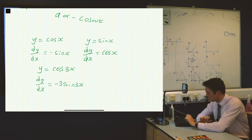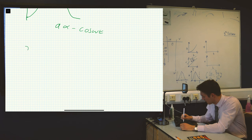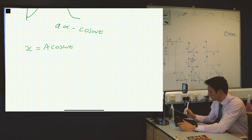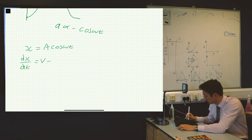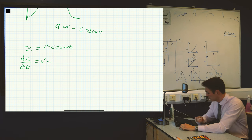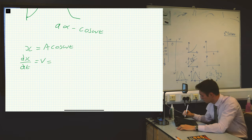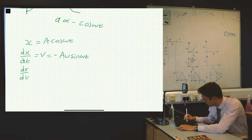Using this information, we can work out the same proportionality statements as before, but now we can actually find the proportionality constants. We know that x equals A cosine omega t. The gradient of the displacement-time graph is the velocity, and to differentiate essentially means to take the gradient. If we differentiate x with respect to t, and x is A cosine omega t, using the rule we just learned for differentiating cosine functions, the answer is minus A omega sine omega t. We also know that taking the derivative of v with respect to t will give us the acceleration.